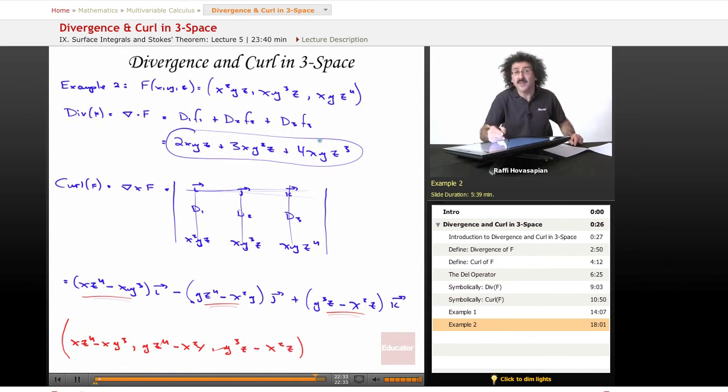Notice the divergence is a scalar. The curl is a vector. It has three component functions. It has an x, a y, and a z. At a given point x, y, z, there is some vector pointing in some direction away from that point. That's the whole idea.